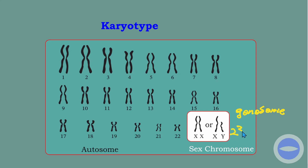Chromosome number 23 is called the sex chromosome or gonosome. XX represents female, and XY represents male. If they ask you about a person's sex, you look at chromosome number 23 — if it's XX, this person is female; if it's XY, this person is male. This is the difference between autosomes and gonosomes.